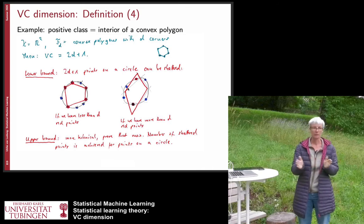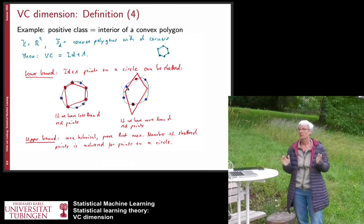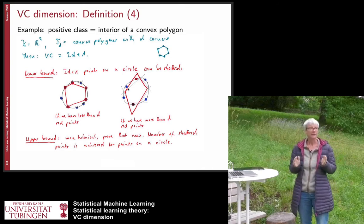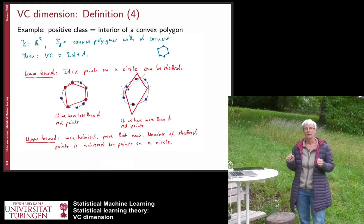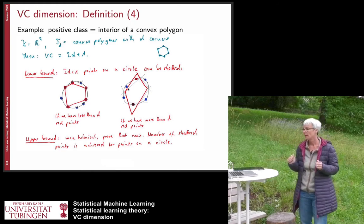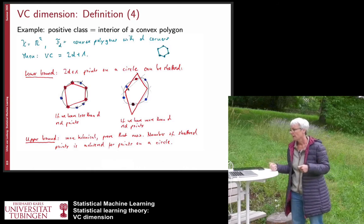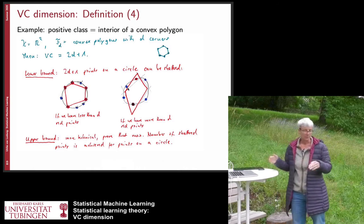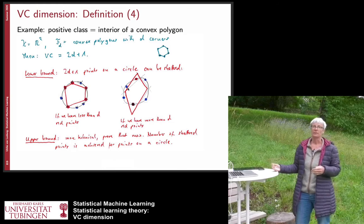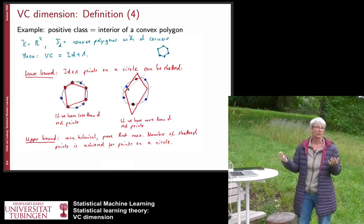This lower bound tells us the VC dimension is at least 2d+1. To show it is not 2d+2 requires a more technical argument that can be found in combinatorial VC dimension textbooks.